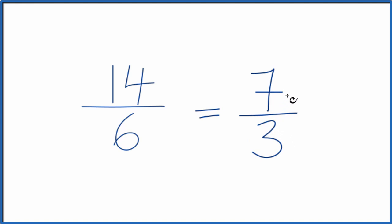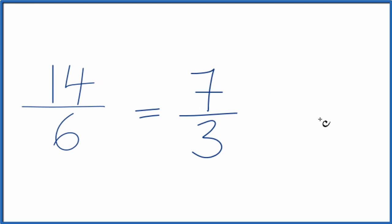Do note this is an improper fraction. The numerator, the 7, that's bigger than the denominator, the 3. So we could change it to a mixed number.